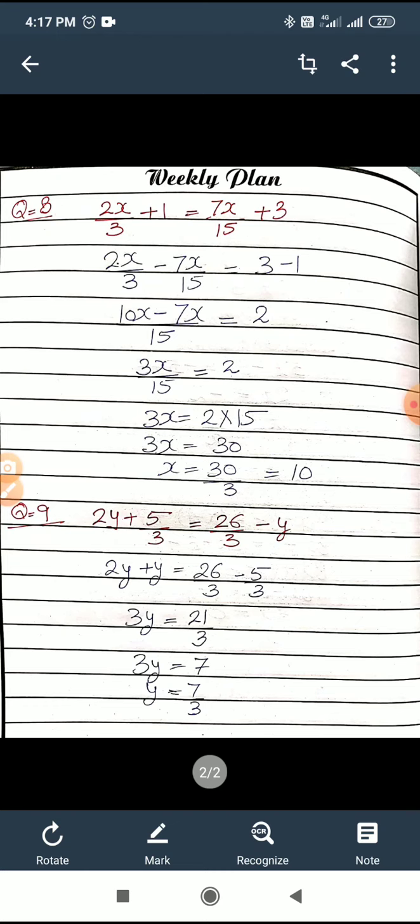I'm very sure it is clear to you. Now question number 9. 2y plus 5 by 3 equals 26 by 3 minus y. So variable with variable and constant with constant. 2y plus y, and 26 by 3 minus 5 by 3. So 2y plus y equals 3y, and 26 by 3 minus 5 by 3 is 21 by 3. Like terms, no need to take LCM. 21 by 3 when divided is 7. 3y equals 7, and hence y equals 7 by 3.